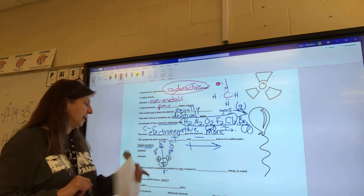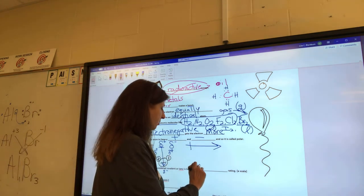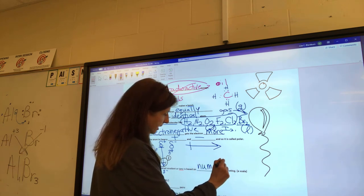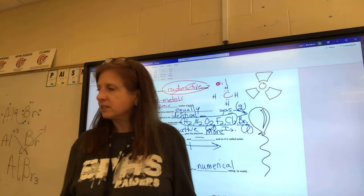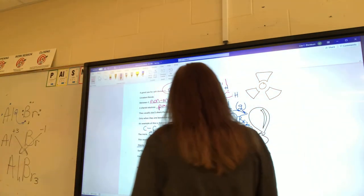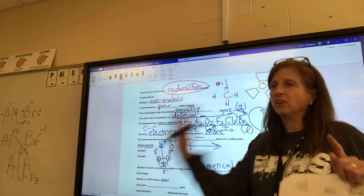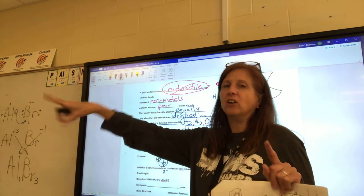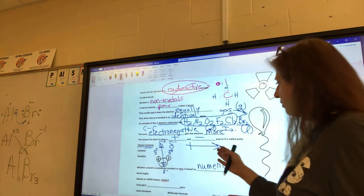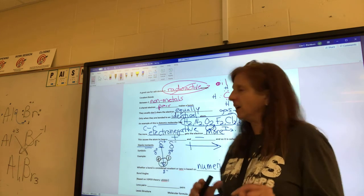Whether a bond is considered covalent or ionic is based on a numerical rating — it's sort of a sliding scale. You look at the scale and figure out whether it's considered ionic or covalent: when do you consider it a share, and when do you consider they flat-out stole that electron and it's not sharing anymore?